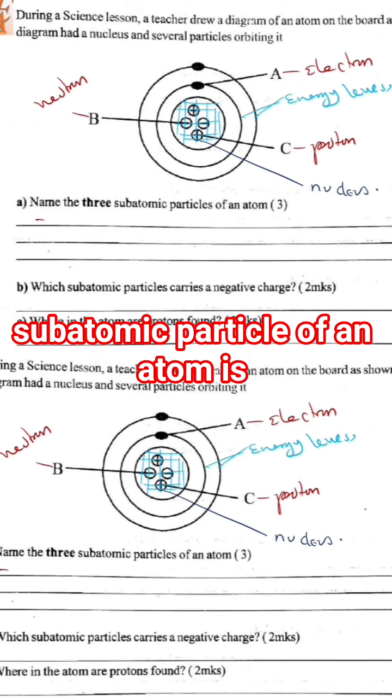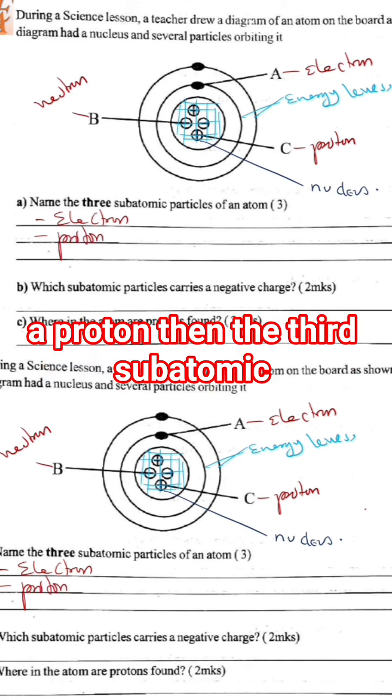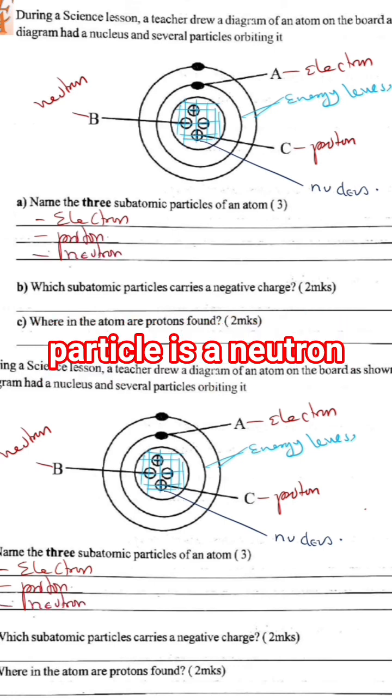an atom. The first subatomic particle of an atom is an electron, the second subatomic particle is a proton, and the third subatomic particle is a neutron.